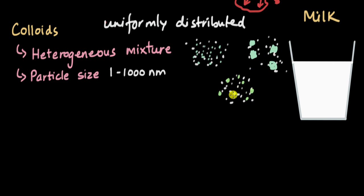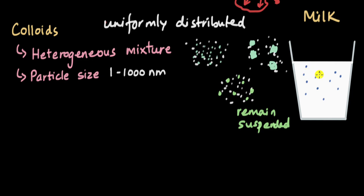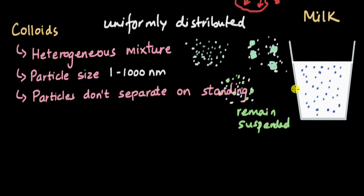Because the colloid particles are much smaller than suspension particles, they remain suspended and uniformly distributed. In the case of milk, you have liquid droplets of fat uniformly distributed across the body of the milk, but they aren't dissolved — they are just suspended in the milk.